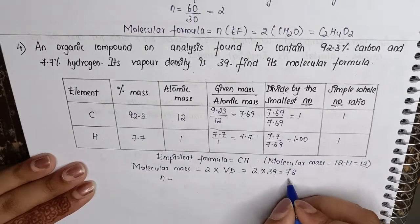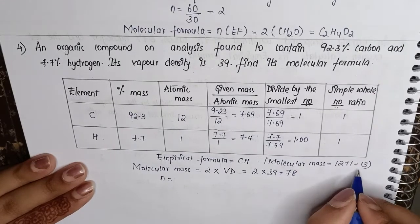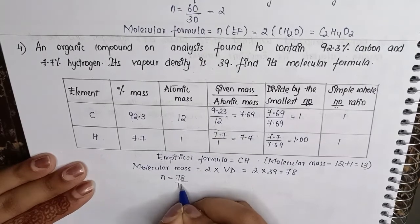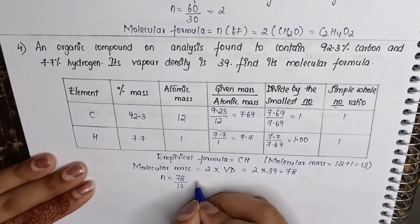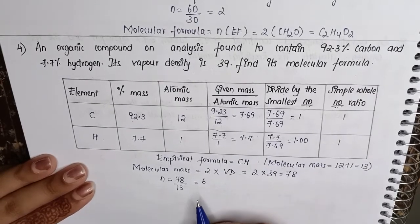Now we will use this to find out the n value. N value is molecular mass which we got from vapor density divided by the molecular mass of the empirical formula, so 78 divided by 13, which will give 6.